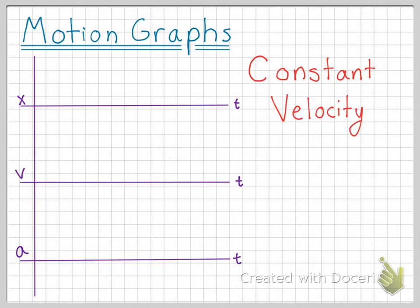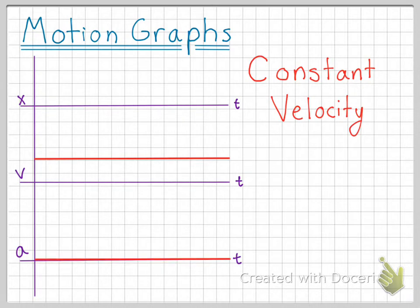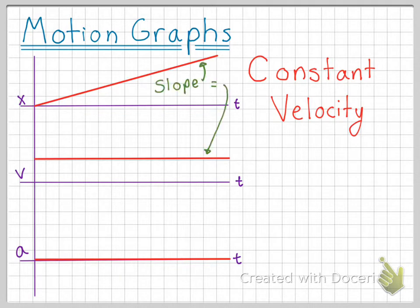For our next graph, we will look at constant velocity. If we are traveling at a constant velocity, our velocity would never change, and therefore our velocity versus time graph would look like this. If we never change our velocity, our acceleration would be zero. And if we have a constant velocity, our position will increase at a constant rate. The slope of the position versus time graph is a positive value, equal to the value graphed in our velocity versus time graph. The slope of the velocity versus time graph is zero, and therefore zero is graphed on the acceleration versus time graph.